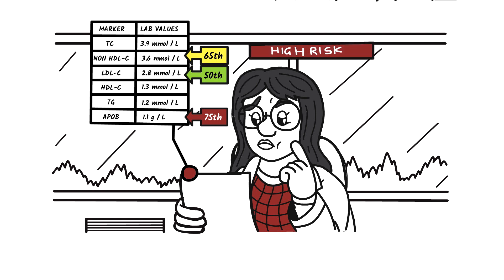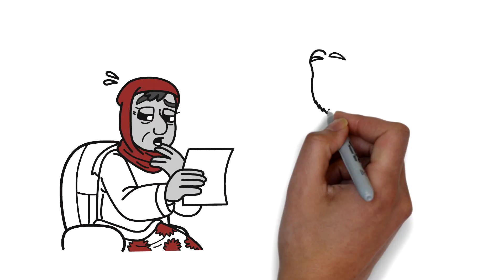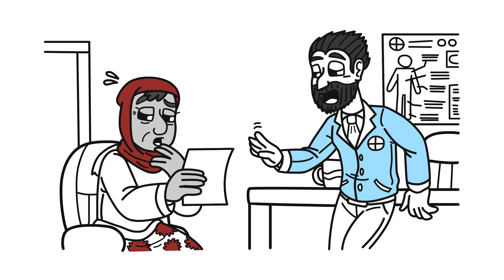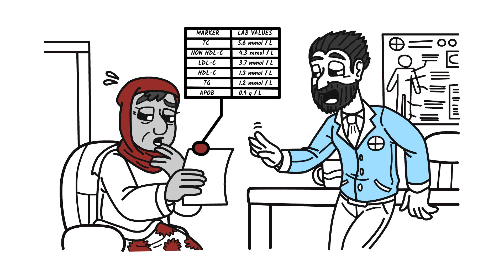And so your patient is, in fact, at a higher risk. But you wouldn't have known this if you hadn't measured their ApoB levels. Finally, let's look at a 50-year-old woman who comes to your clinic. Her non-HDL-C is at the 75th percentile and her LDL-C is at the 80th percentile. But once you measure her ApoB, you see that she's only at the 51st percentile.